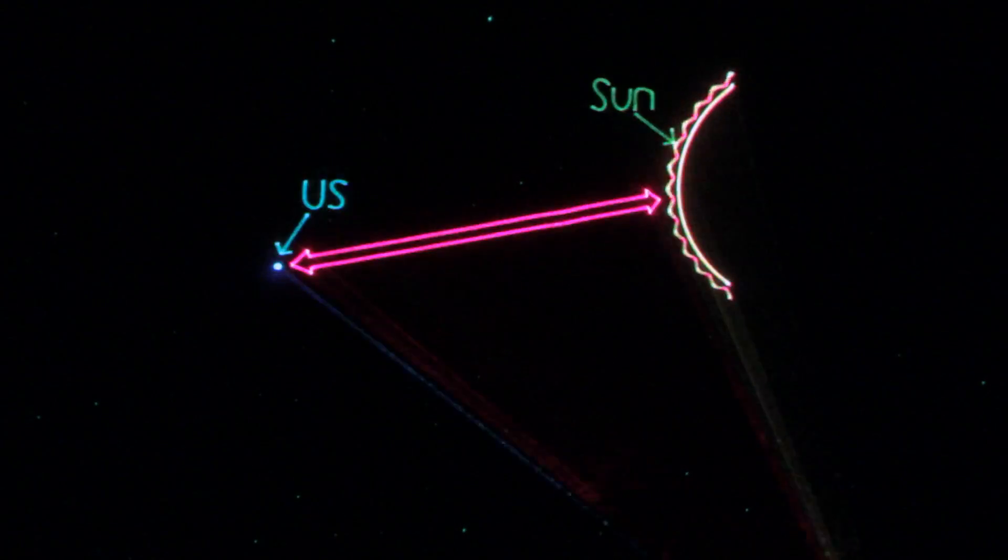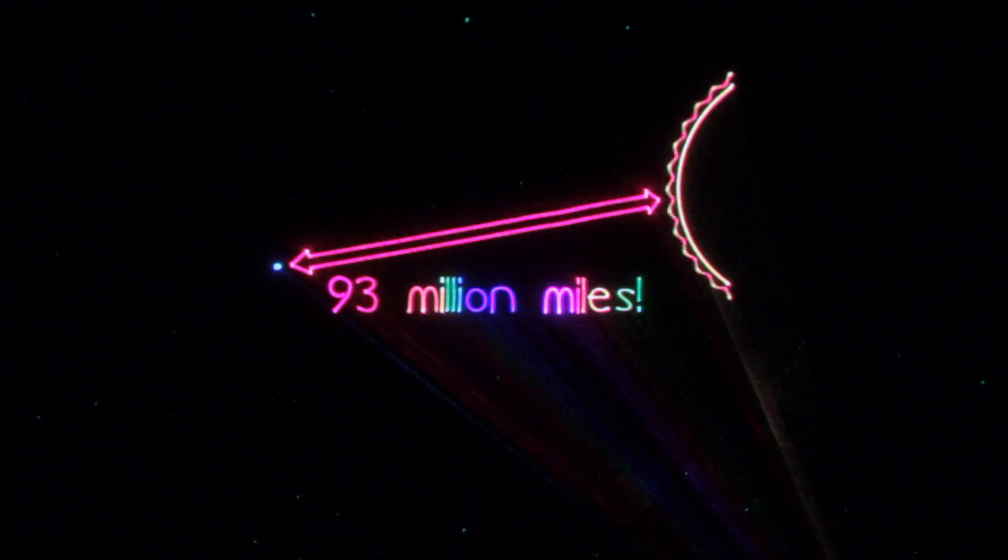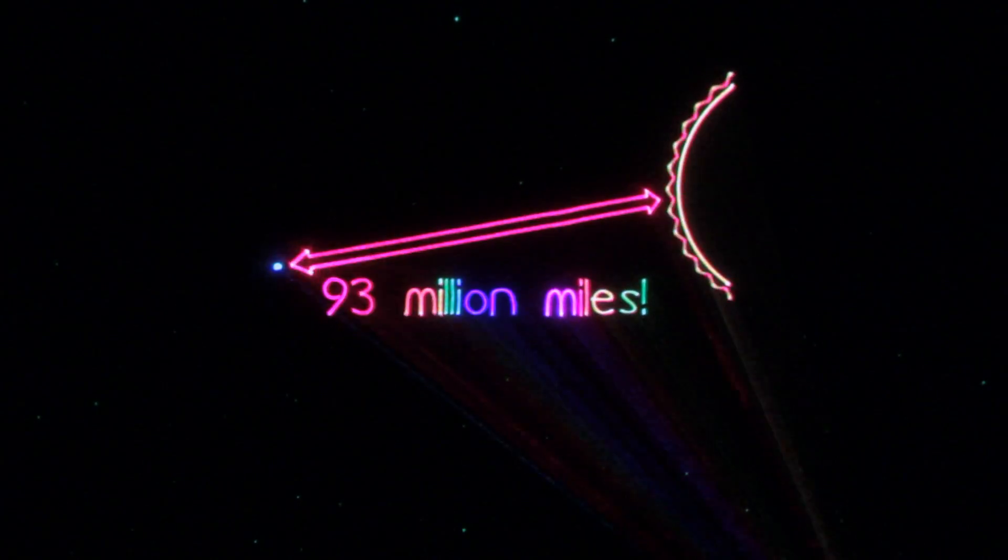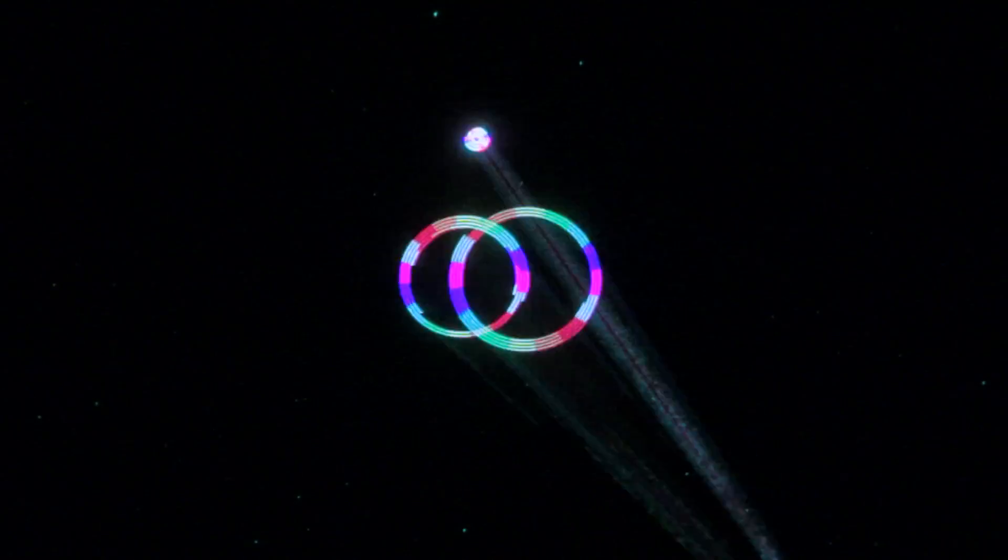The sun is far away. It's about 93 million miles away, and that's why it looks so small.